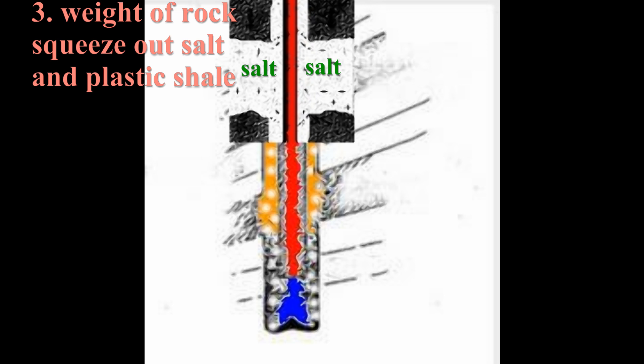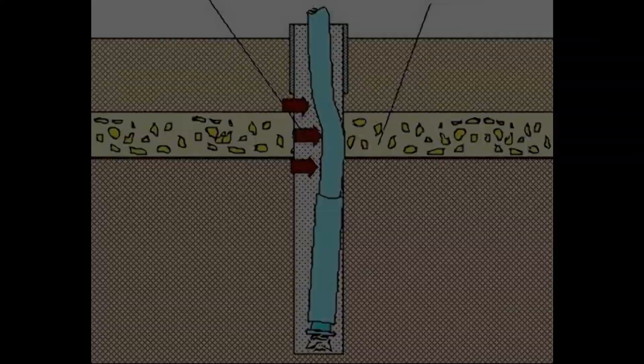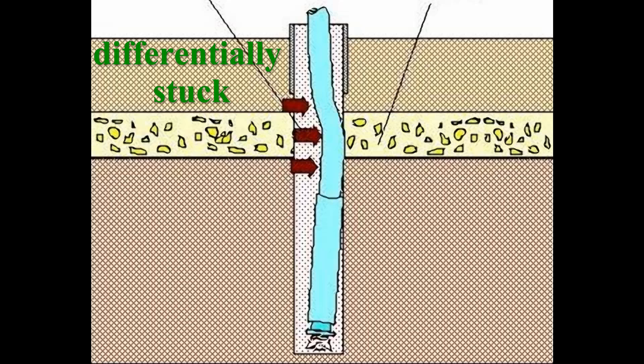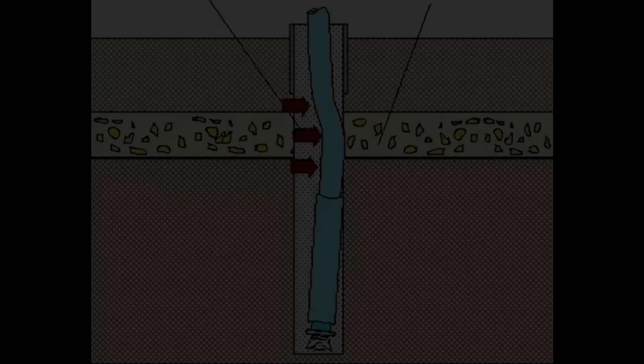Once the pipe becomes stuck, for whatever reason, it is necessary to free it. The cause for the pipe becoming stuck in the first place must be found. If the pipe is differentially stuck, then the first approach would be to reduce the weight of the mud and eliminate the overbalance. Of course, this is only possible if there are no concerns about a permeable zone kicking. If reducing the mud weight and eliminating the overbalance is not possible, then another approach might be tried.